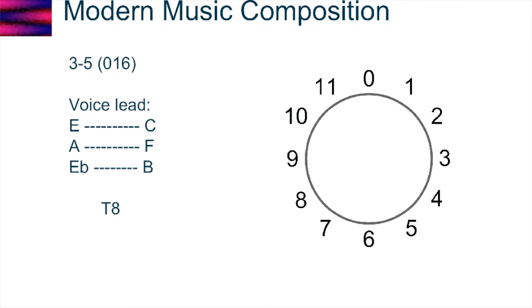So, let's talk about our example. As I mentioned, we're using the set class 3-5, the 0, 1, 6 set class. And our voice leading, what we're going to do is we're going to choose a particular set of tones for this set class. That is E, A, and E-flat. So, if I map that out here, I've got E-flat, I've got E, and I've got A. And you can see that 0, 1, 6. Remember, this set class is an abstraction.